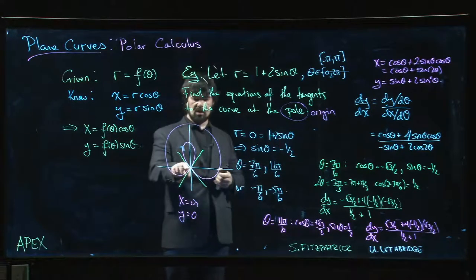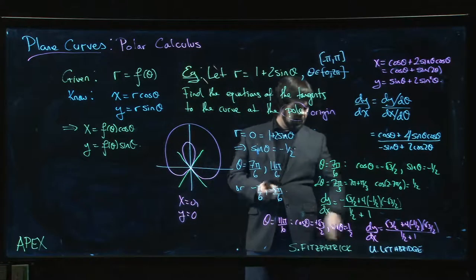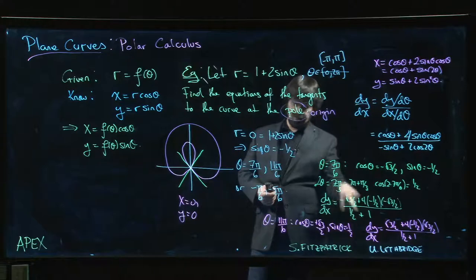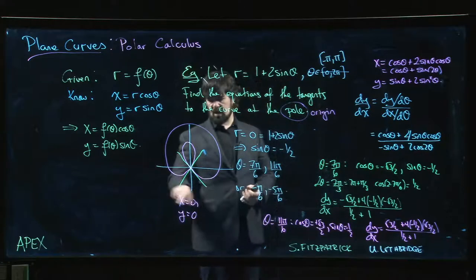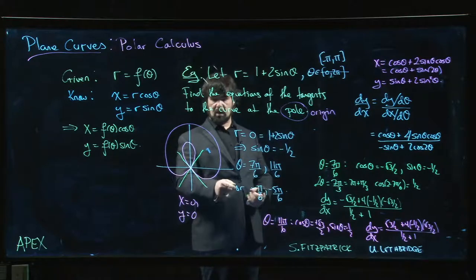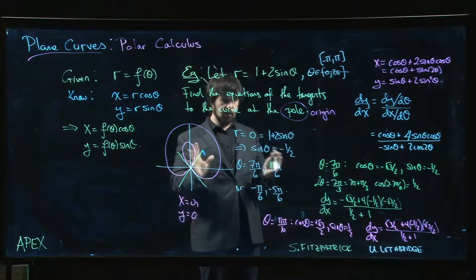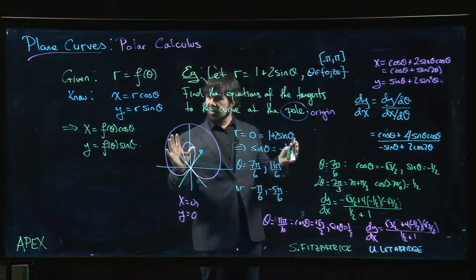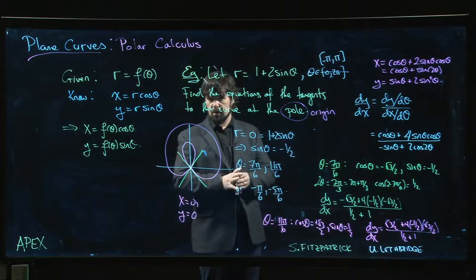Tangents go through the origin, so the lines are just going to be y is equal to mx, where m is the slope. One of the things that you'll notice, and it jives with the picture, the second slope is the negative of the first slope. These are opposite signs. So we can sort of see that as you're coming around, we have the two slopes with equal and opposite slopes for those two tangent lines. If you want to see the simplified numerical answers, you can look them up in the textbook.